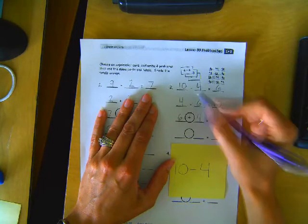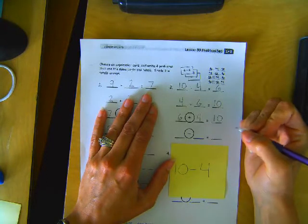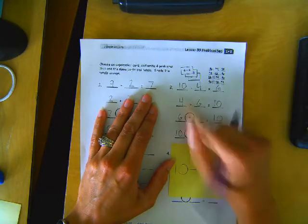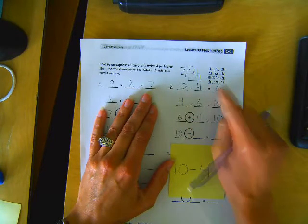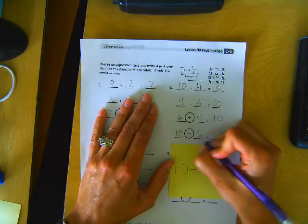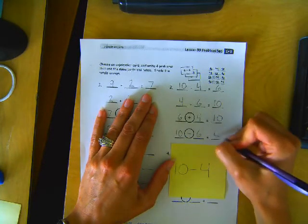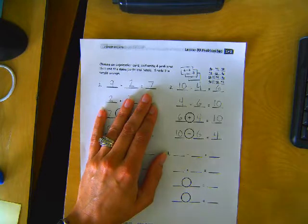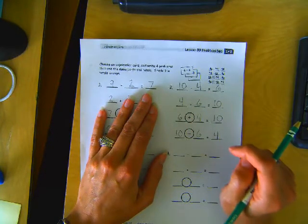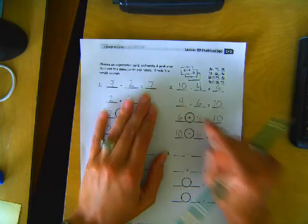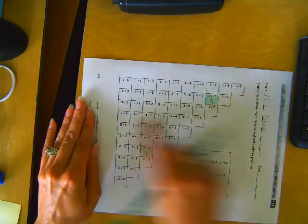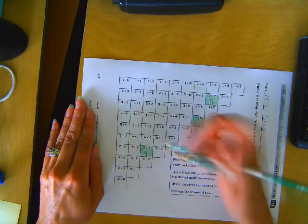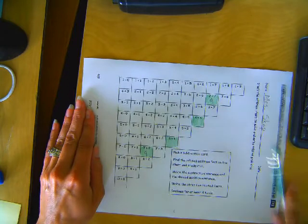And now we've done the two addition number sentences, so we need a second subtraction sentence. We know that subtraction number sentences always start with the bigger number. So we already did 10 minus 4, so this time we're going to take away the other one that hasn't been used yet. So we're doing 10 minus 6, and that equals 4. Now we need to look at the two addition sentences and find them on the other side. We have 4 plus 6 and 6 plus 4. That was 10.